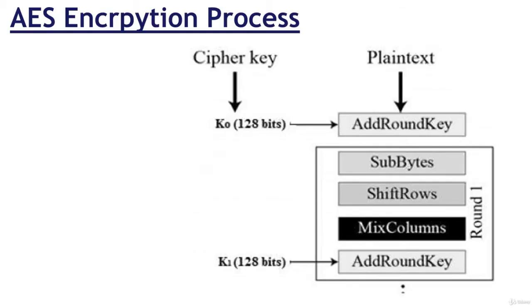Here we restrict to a description of a typical round of AES encryption. Each round comprises four sub-processes, the first of which is depicted in this illustration. Let's begin by discussing byte substitution, or sub-bytes. The 16 input bytes are substituted by looking up a fixed table, or S-box, given in the design. The result is a matrix of 4 rows and 4 columns.